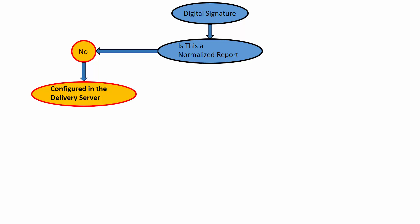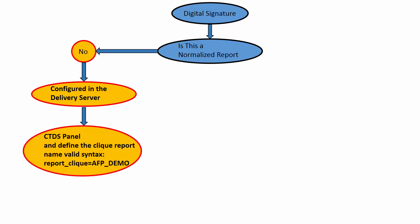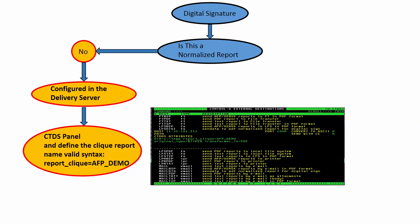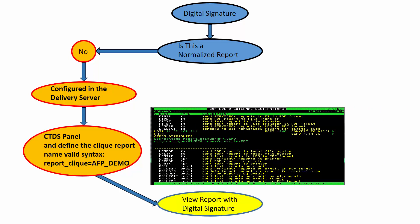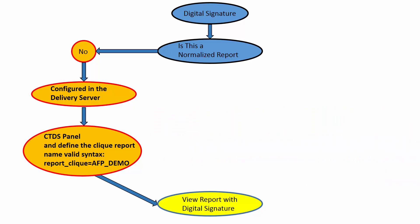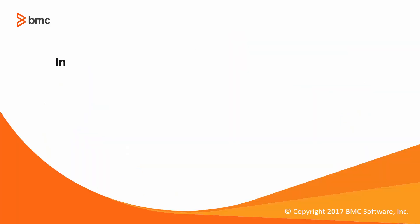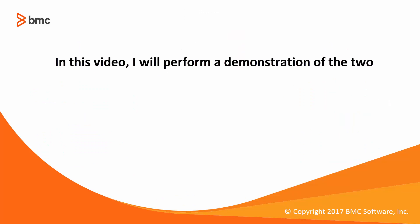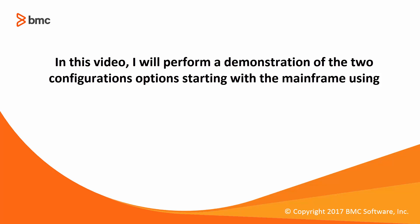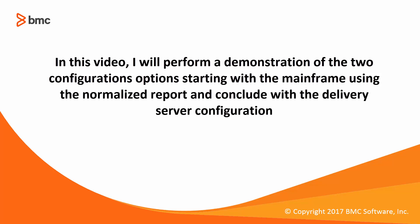After configuring the click report in the delivery server, it also needs to be defined in the mainframe using the CTDS panel. This is the correct syntax. Only after the previous flow is completed can all reports that are not normalized be viewed with the digital signature. In this video I will perform a demonstration of the two configuration options, starting with the mainframe using a normalized report and concluding with the delivery server configuration.